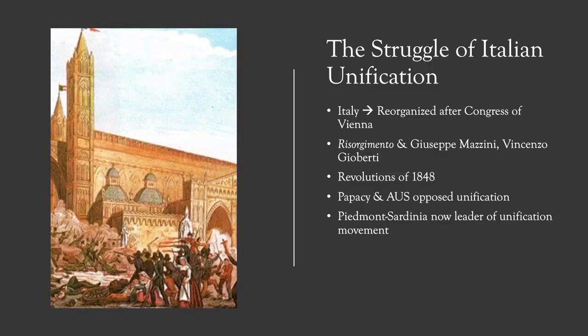Let's first provide some context as to what has been happening in Italy in the first half of the century. Italy was one of many states reorganized after the Congress of Vienna. The Congress of Vienna maintained the decentralization of Italy, establishing it as nine different states across the peninsula. These states were either controlled by Austria or by conservative monarchies, like the House of Savoy in Piedmont or the House of Bourbon in the Kingdom of the Two Sicilies. Italy had not been unified since the days of the Roman Empire in the 5th century CE.